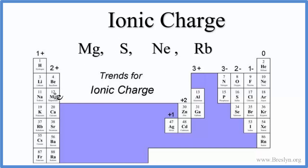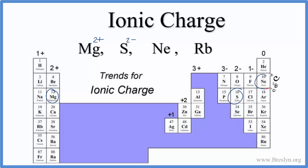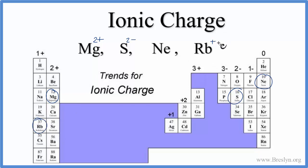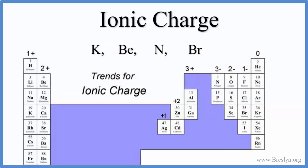Magnesium is right here in group 2, so when it forms ions it'll have a 2+ charge. Sulfur is in group 6, sometimes called 16, so it'll have a 2- charge. Neon is a noble gas, so it won't have any charge — we'll just leave it as is. Rubidium is over here in group 1, so we write plus, meaning 1+. It's important to practice this, so give these a try.